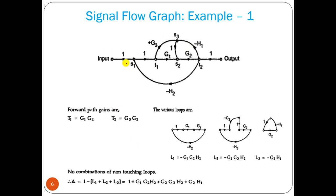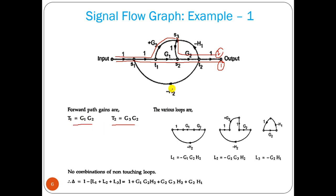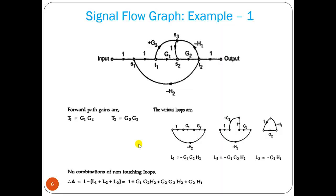Now, from this signal flow graph we look for forward paths. We can see one forward path with gain G1*G2. Looking further, we can go another way to reach the output — that is forward path 2 with gain G3*G2. So we have two forward paths: P1 = G1*G2 and P2 = G3*G2. Now we look for loops.